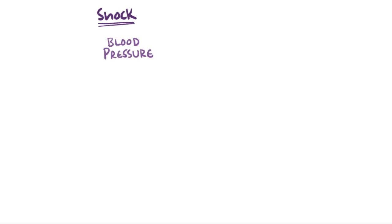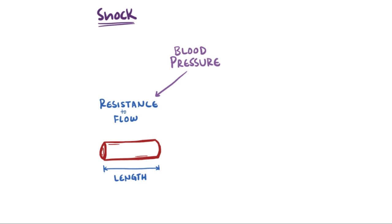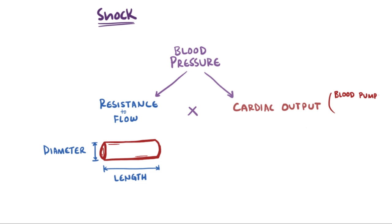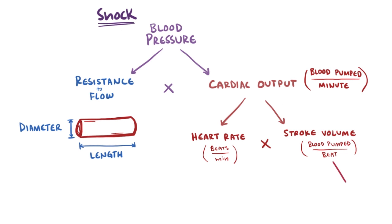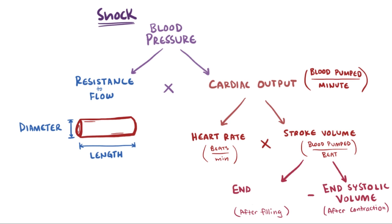Blood pressure is determined by two components: the resistance to blood flow in the blood vessels — things like vessel length, blood viscosity, and vessel diameter — and the cardiac output, which is the volume of blood pumped by the heart per minute. Cardiac output breaks down into heart rate times stroke volume. Stroke volume is found by taking the end diastolic volume and subtracting the end systolic volume.